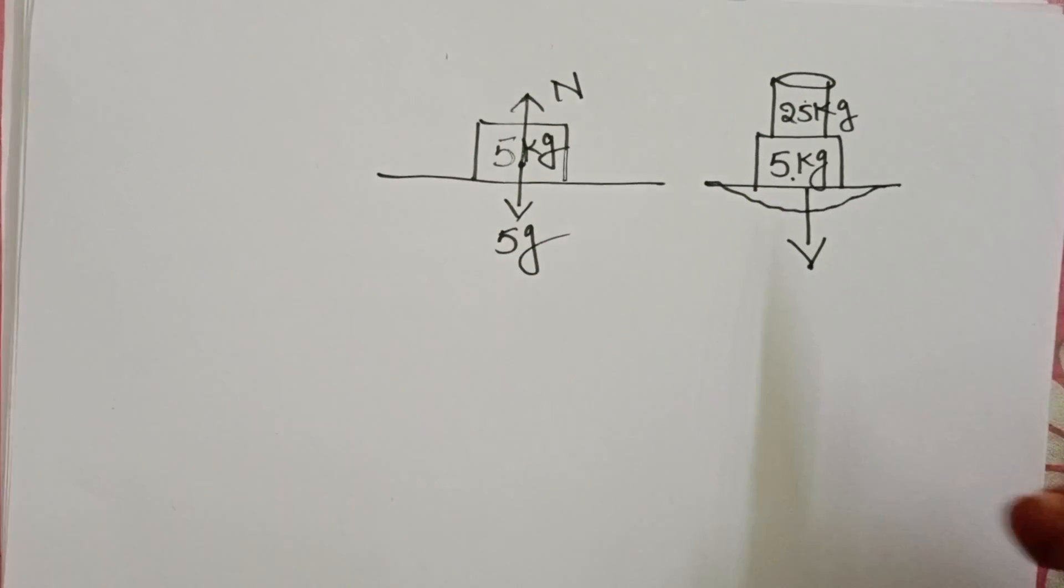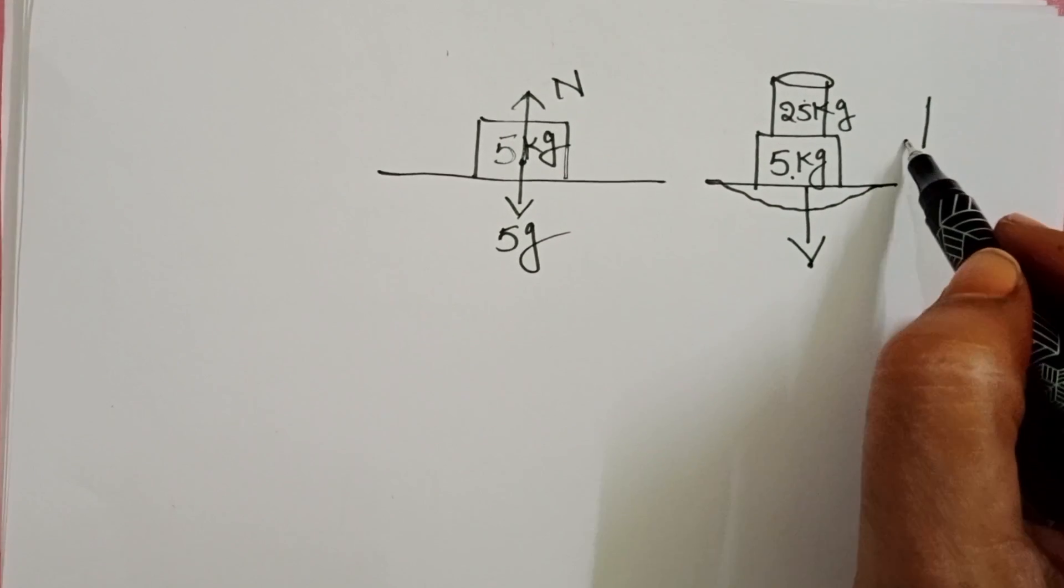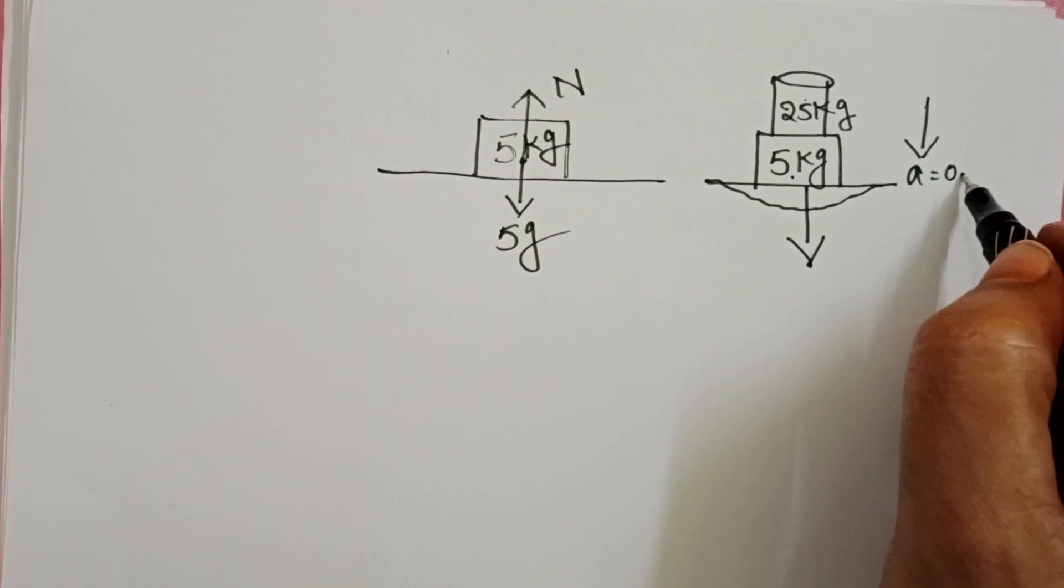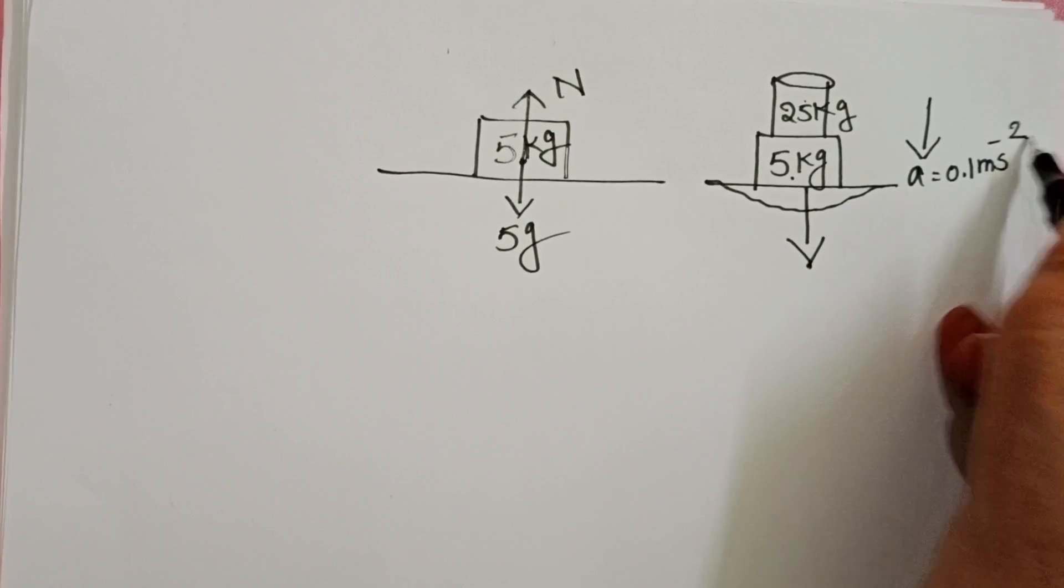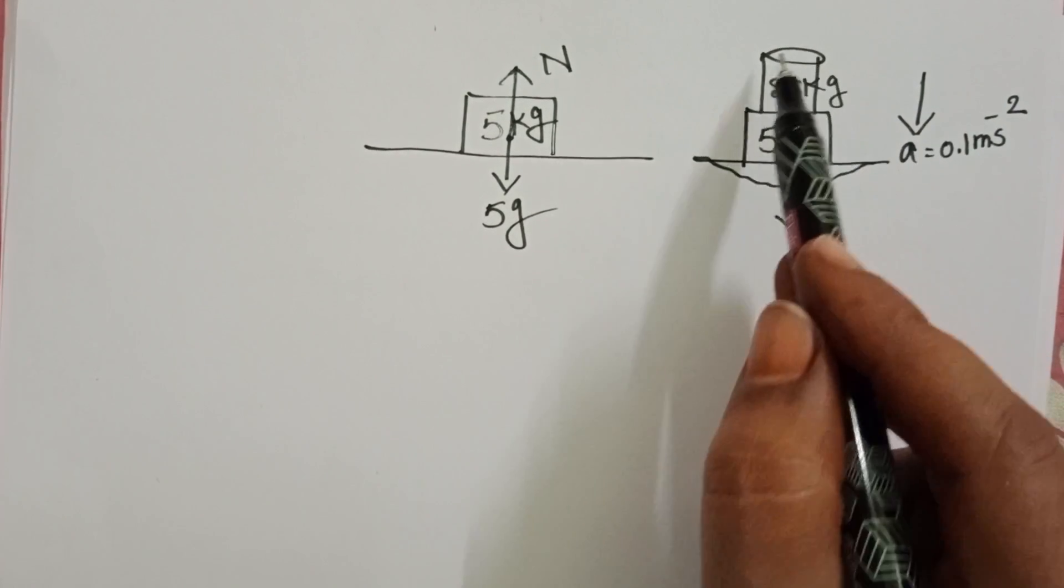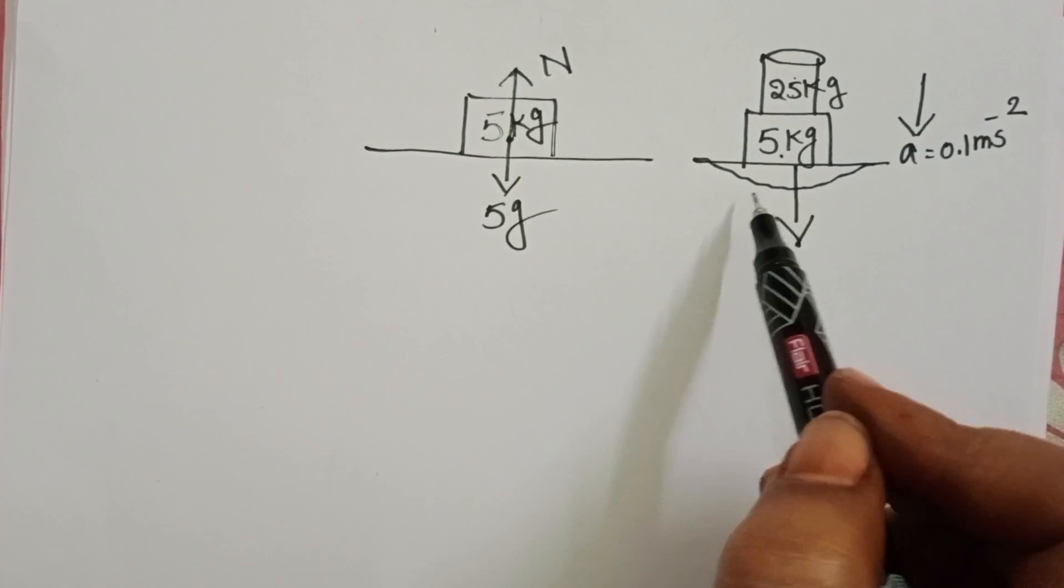Both wooden block and cylinder together accelerate in downward direction. The given acceleration of the system is 0.1 m per second squared. We have to find the force exerted by the system on the surface.